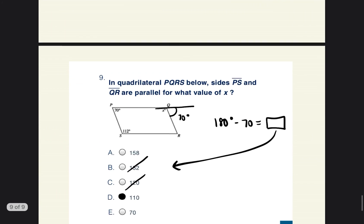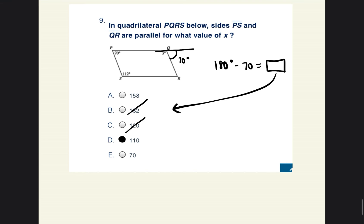We're going to go ahead and go to problem number nine, which this is, I worked it out a little bit, but I want us to start from scratch. Okay. So it says, in the quadrilateral, P, Q, R, S below, sides P and S and Q and R are parallel for what value of X?